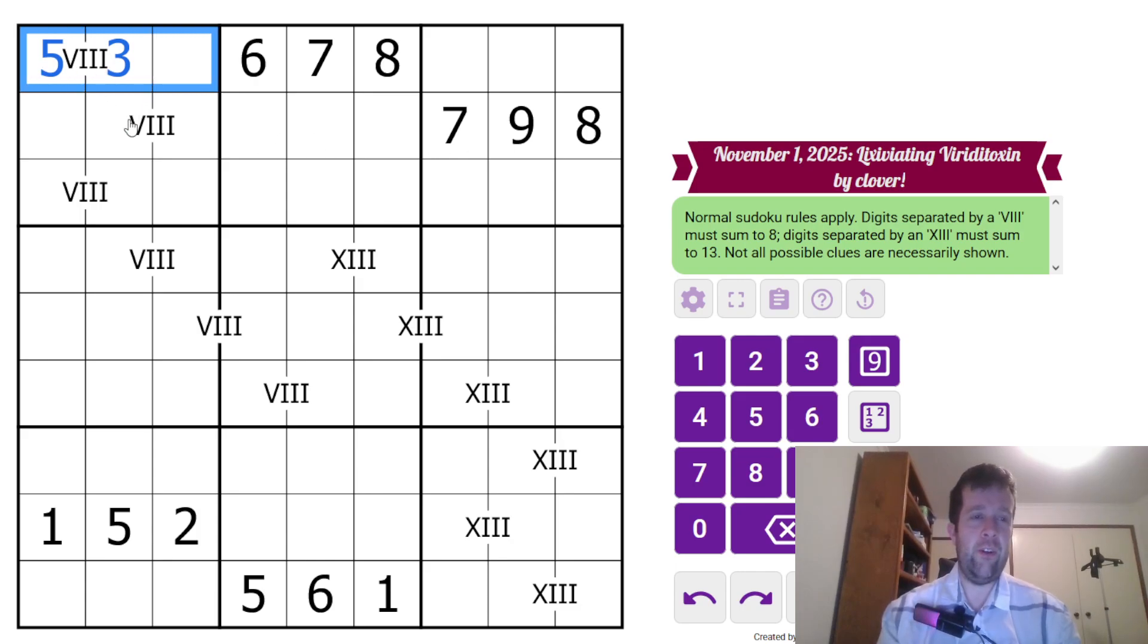Now, because I got five and three here, this cannot be five and three. It can't be seven and one, so it has to be two and six. This two is gonna tell us which way around that goes. Leaving this to be the one, seven. One tells us which way around that goes. Four, eight, and nine left to place in the box. Eight and nine make that a four. Eight over here makes that a nine, and this is an eight.